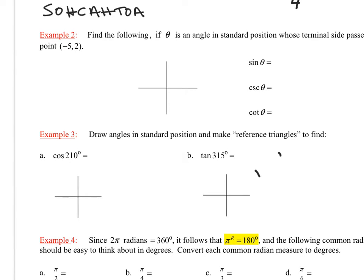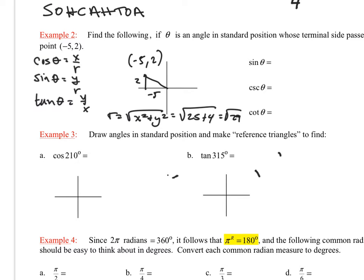Example 2: Find the following if theta is an angle in standard position whose terminal side passes through the point (-5, 2). And so we're going to try to draw this. This would be my point (-5, 2). And that's the coordinates of that point right there, (-5, 2). And what we want to do with that now is find out what is the sine of theta. Well, if you remember the sine of theta on the coordinate plane, that would just be the y-coordinate over your r.